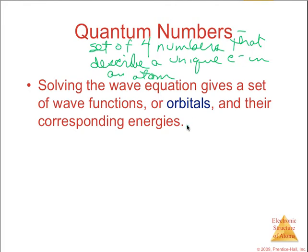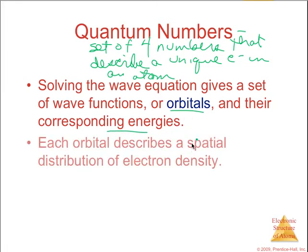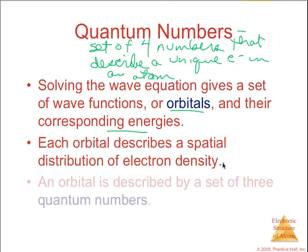If we solve the wave equation, we get a set of wave functions or orbitals and their corresponding energies. Each orbital describes the spatial distribution of electron density and is described by a set of three quantum numbers. The fourth quantum number differentiates between the two electrons that would be found in an orbital.